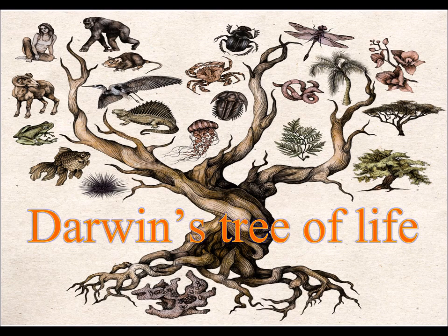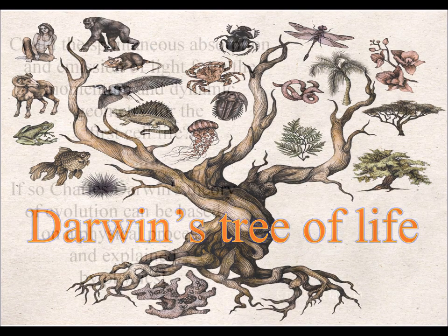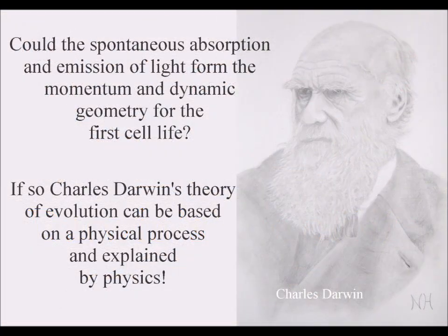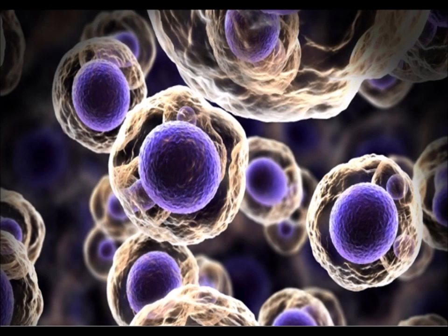We have the great complexity and diversity of life, and Charles Darwin's theory of evolution explains how these life forms changed over time, but it says nothing on how the first cell life formed out of non-living matter.